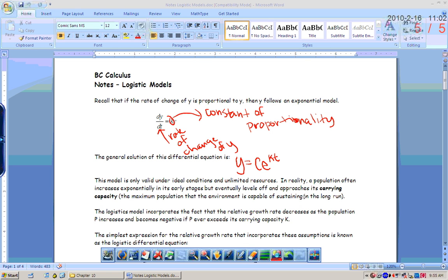The carrying capacity is the maximum population that the environment is capable of sustaining in the long run. Like if you have a cage of rabbits, they'll reproduce for a while, but eventually some of them are going to die off because there's not enough space or food.